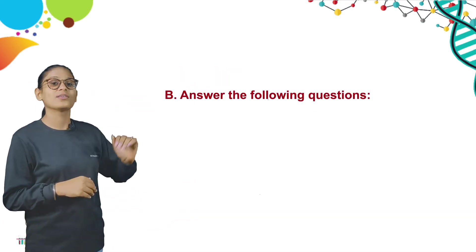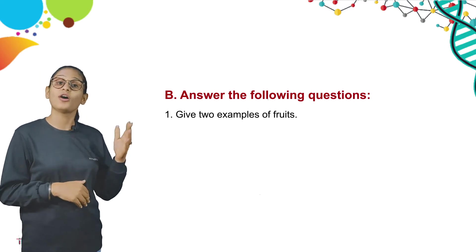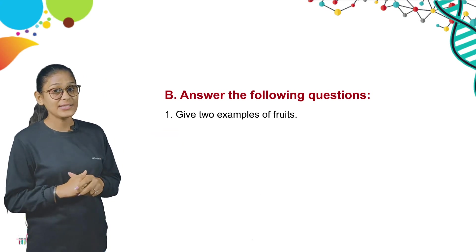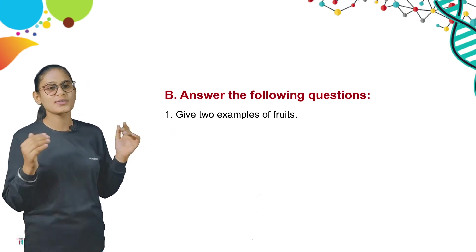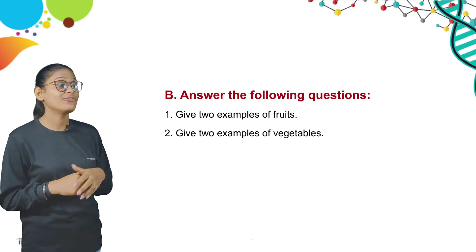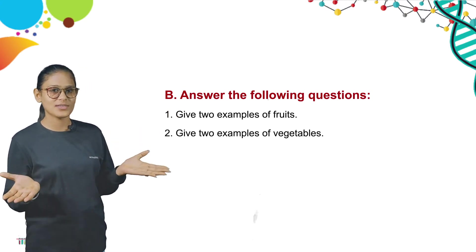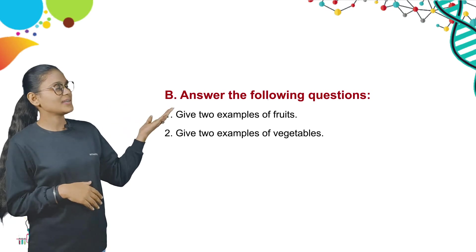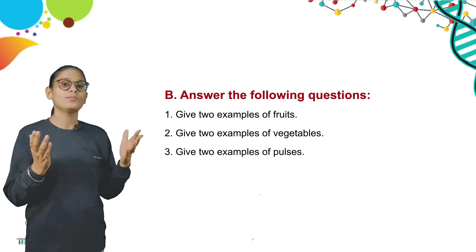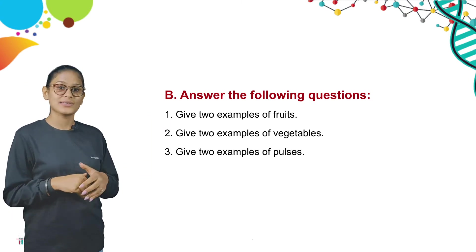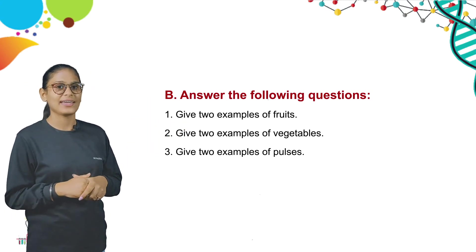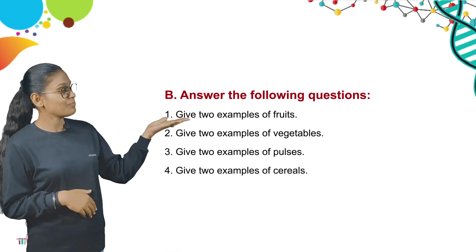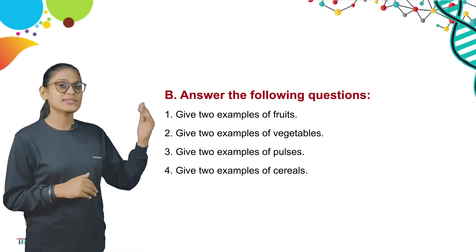Now answer the following questions. First question: give two examples of fruits — you can write mango and banana. Second question: give two examples of vegetables — you can write carrot and potato. Third question: give two examples of pulses — kidney beans and green gram. Fourth question: give two examples of cereals — you can write rice and corn. Write down these answers in your notebooks.